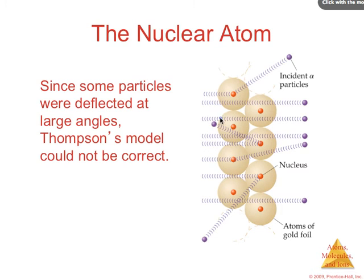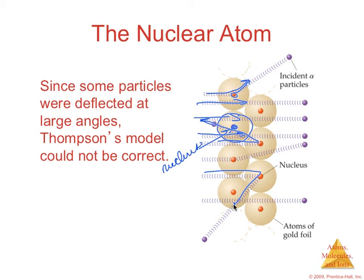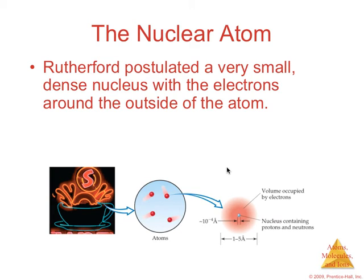And what he envisioned was atoms with a positively charged nucleus concentrated at the center of the atom with a lot of empty space around that nucleus so that most of the alpha particles were able to go straight through. However, if they happened to come close to the nucleus, this concentrated positive charge, they would be deflected. And that's what you see going on in some of these cases. And his new model of the atom explained his results. Rutherford postulated a very small dense nucleus with the electrons around the outside of the atom.